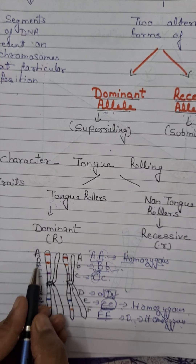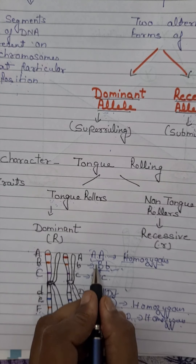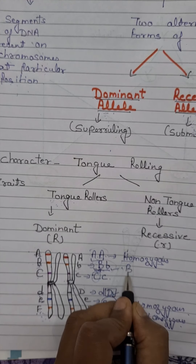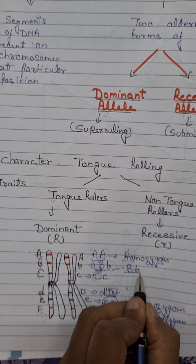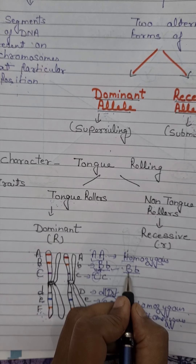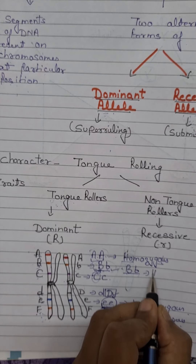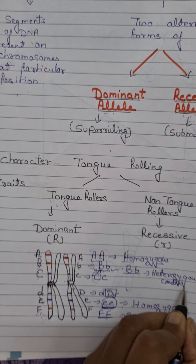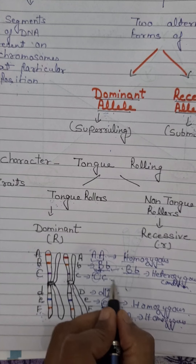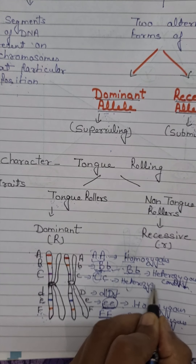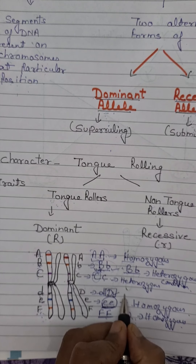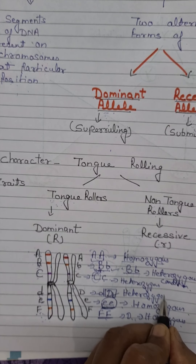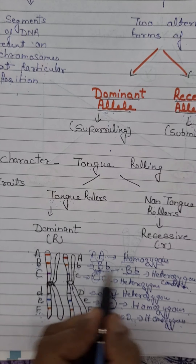But in the case of the 2nd, 3rd, and 4th characteristics, they are represented by 2 different alleles — one dominant and one recessive. This type of condition, in which one allele is dominant and another is recessive, is called heterozygous condition. The 2nd, 3rd, and 4th characteristics all represent heterozygous conditions because the two different alleles — one dominant and one recessive — are present.